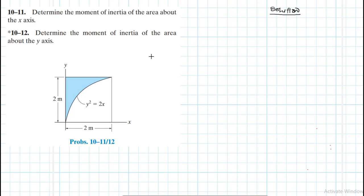We have been asked to determine the moment of inertia about the x-axis and the y-axis. To start with, let me briefly discuss what moment of inertia of an area is. It is also called the second moment of area, or area moment of inertia.